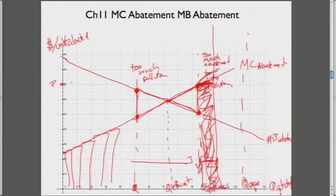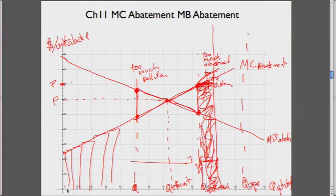If the regulator is setting an optimal price, they would set some optimal price at the efficient point. This would reflect the societal level. If the regulator does it right, they put the price at the efficient point. At that price, we're getting this much abatement, and there's still this much pollution remaining.